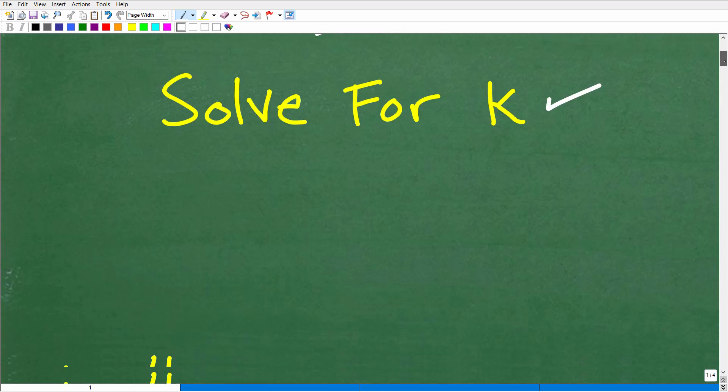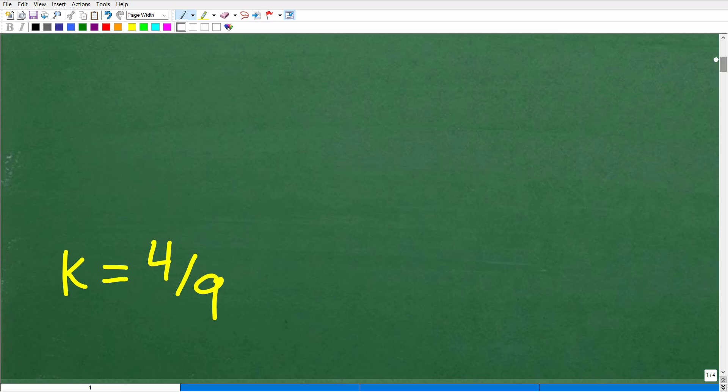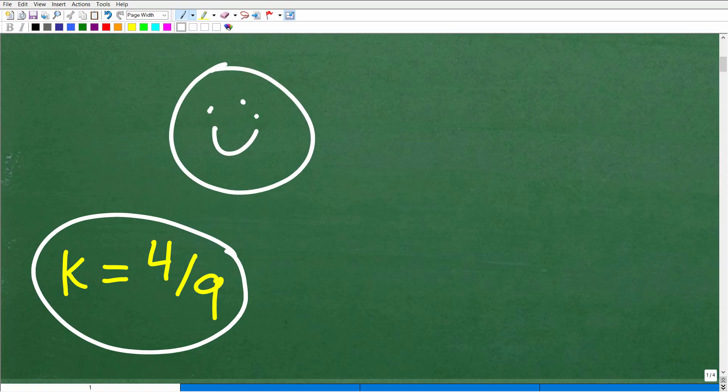What is k? Well, there's the equation, and k equals 4 ninths. If you got this right, that is fantastic. Let's give you a nice little happy face, an A plus, 100%, and multiple stars. You can tell your friends and family that you know a thing or two about square roots.